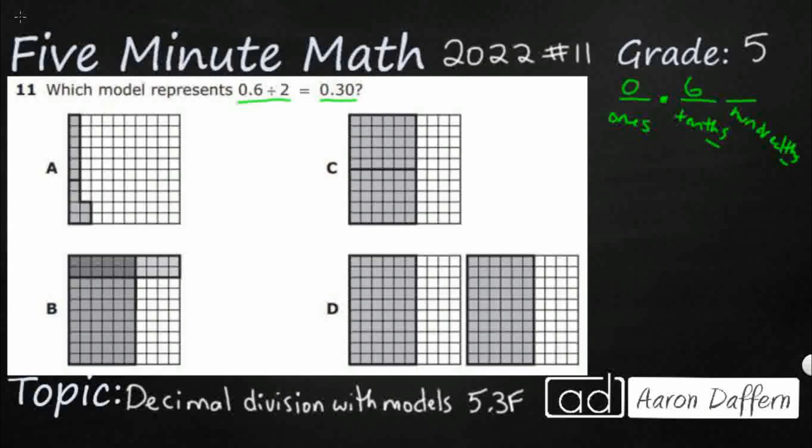So here's my 6 tenths. But remember, you can always add zeros after a decimal. It's no big deal. So 6 tenths is the same as 60 hundredths. And that makes a lot more sense. 60 hundredths divided by 2 is going to make 30 hundredths. That makes sense. 30 and 30 make 60.